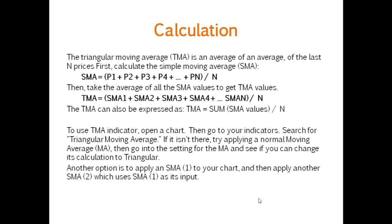The TMA is an average of an average of the last N prices. First, calculate the Simple Moving Average (SMA) by adding all the prices and dividing by the number of prices. Then take the average of all the SMA values to get the TMA values. The TMA can also be expressed as: TMA equals the sum of SMA values divided by N.